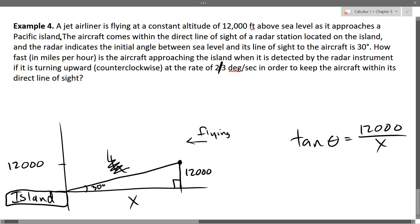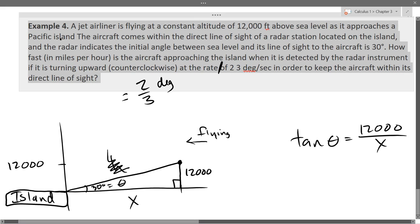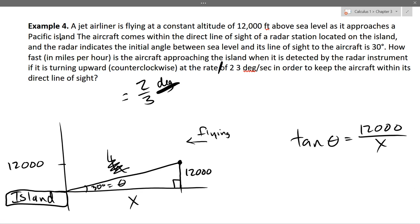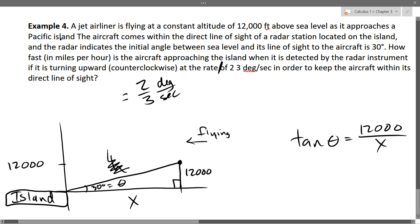So we got tan theta equals opposite over X. I labeled 30 degrees. Is that angle changing? So I need another variable right there. What's a good variable for an angle? Theta. They say the radar indicates the angle is turning upward at a rate of 2/3 degrees per second. That relates to d theta dt. We want to know how fast is the aircraft approaching, which will be dx dt.